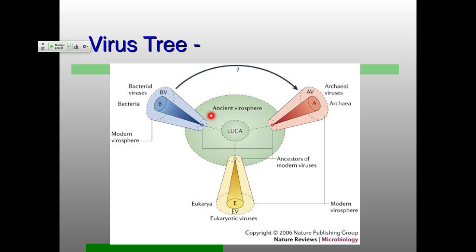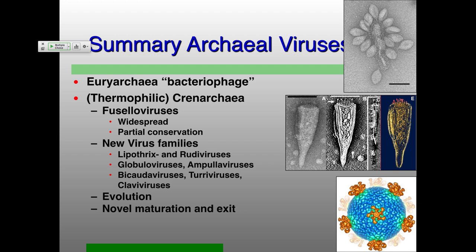This is work from David Prangishvili and Patrick Forterre. They think there was an ancient virosphere around our last universal common ancestor, and then viruses evolved together with their hosts — bacterial viruses with bacterial hosts, archaeal viruses with archaeal hosts, and eukaryotic viruses with eukaryotic hosts — but all of them developing from this ancient virosphere. We may talk about the giant viruses a little bit later on.